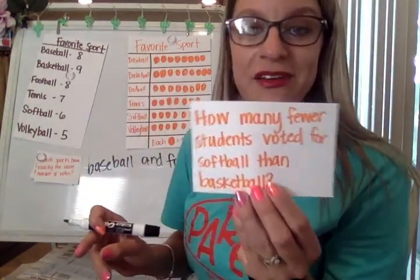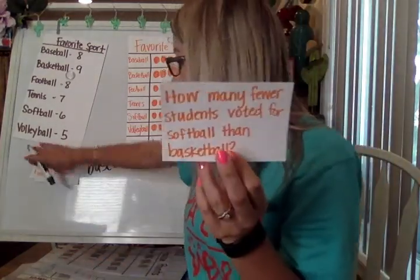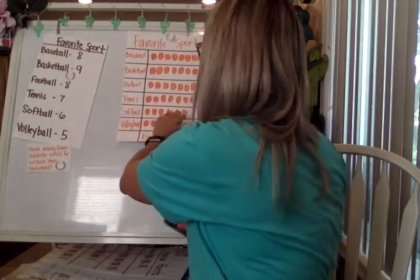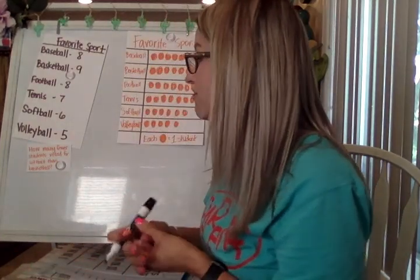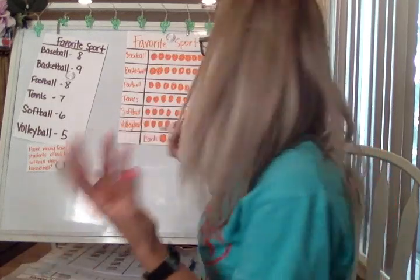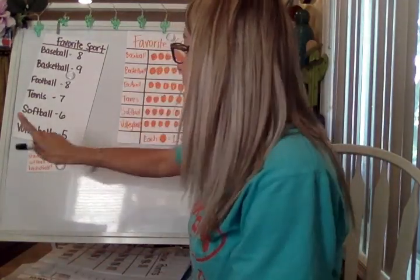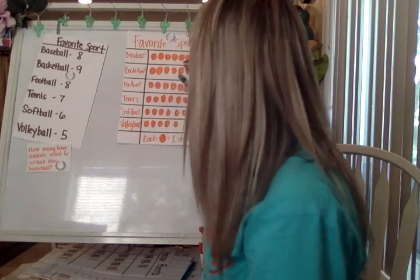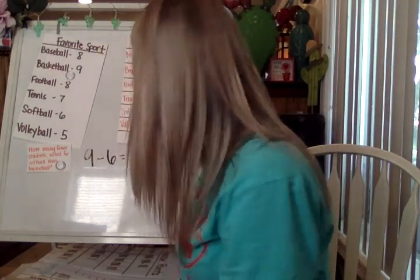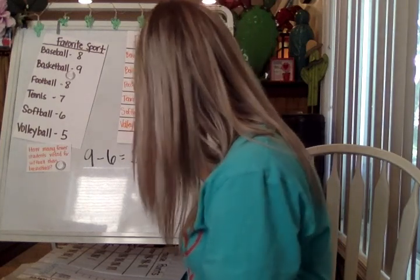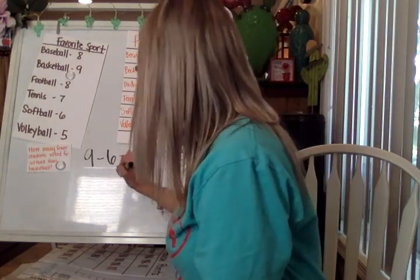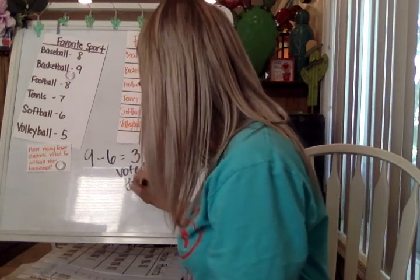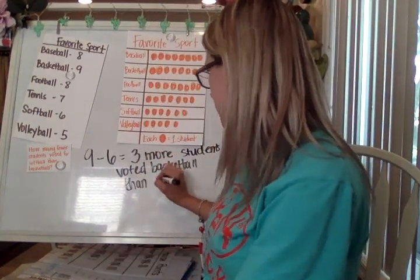How many fewer students voted for softball than basketball? The word 'fewer' tells me I'll need to do a subtraction, and there's also the comparison word 'than.' Softball has 6, and basketball has 9. So we're doing 9 minus 6 equals 3. Three more students voted for basketball than softball.